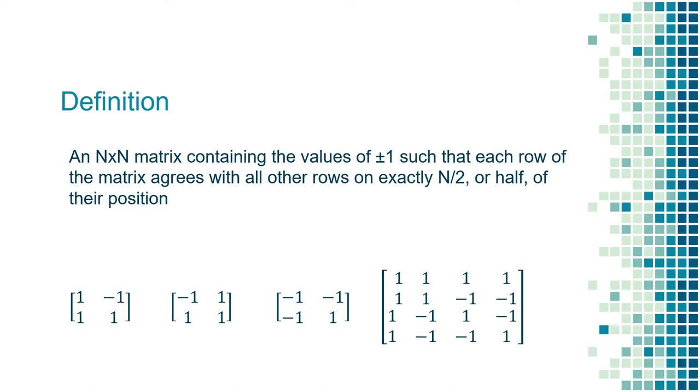Thus, only one-half of the values in each row agree with the values in all other rows. Here are some more 2-by-2 Hadamard matrices. Take a look at them and see if the definition makes more sense to you.